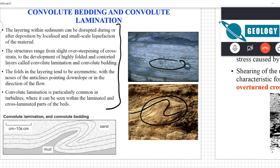You can see cross-stratified strata here — this is lamination. This laminated layer has become converted to convolute bedding. The same thing is happening within this example. These are evidences that this layer at some point was liquefied.